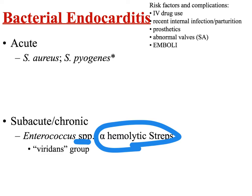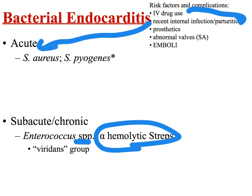Before talking about the presentations of acute versus subacute, I want to revisit risk factors. Patients with a history of IV drug use, a recent internal infection, or childbirth have a way of getting bacteria into the bloodstream that is more consistent with acute endocarditis. With recent internal infections — say, septic arthritis or puerperal fever — an aggressive organism like Staph aureus can invade the vasculature and spread hematogenously throughout the body. If bacteria happen to colonize in the heart, you'll have an acute endocarditis presentation.